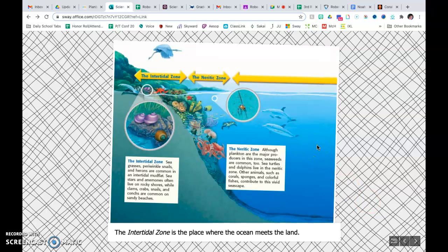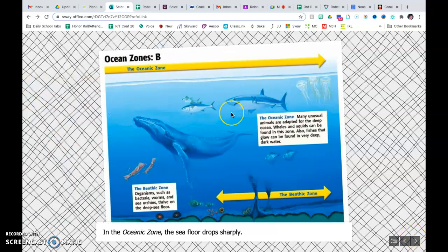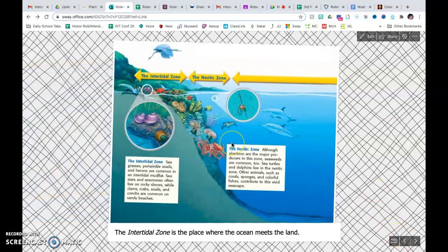The different zones of the ocean. We have the intertidal, the neretic, and the oceanic. In the oceanic, we have the benthic. So let's go back and break these down.